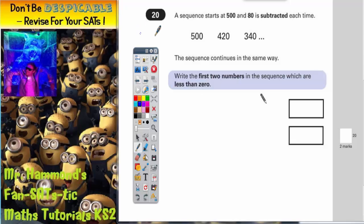Question 20. A sequence starts at 500 and 80 is subtracted each time. 500, 420, 340. The sequence continues in the same way. Write the first two numbers in the sequence which are less than 0.